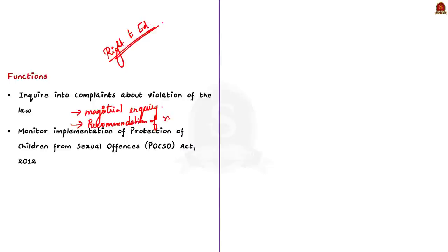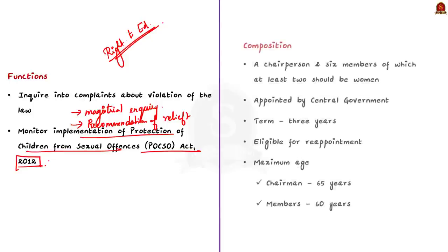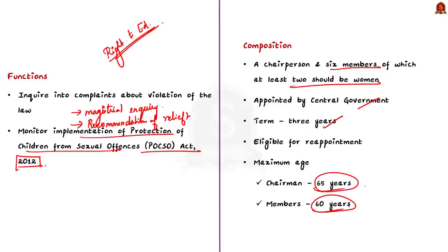Apart from this, NCPCR also monitors the implementation of the Protection of Children from Sexual Offences Act 2012. The Commission has a chairman and 6 members, of which at least 2 should be women. All are appointed by the central government for 3 years. The maximum age to serve in the commission is 65 years for the chairman and 60 years for members. The chairman and members shall not hold office for more than 2 terms.